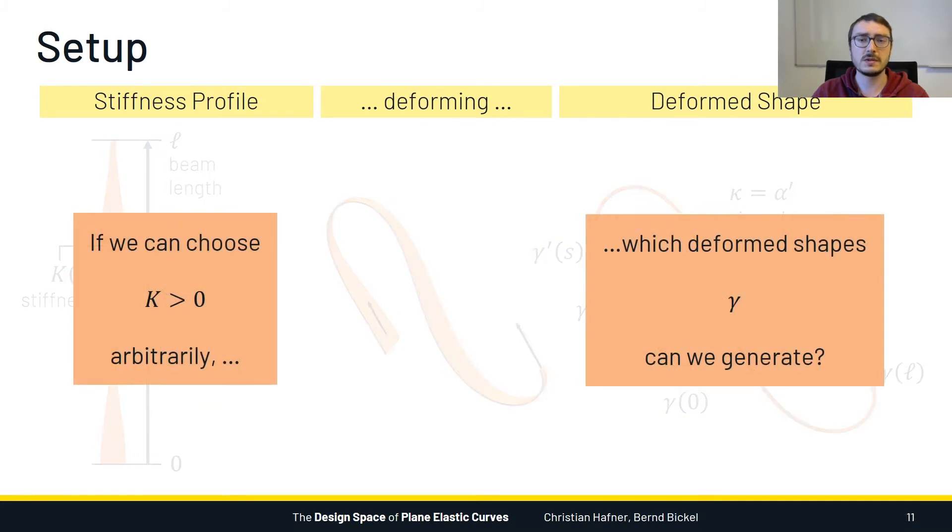And the question we want to answer is the following. If we are allowed to arbitrarily choose a stiffness function, which has to be everywhere positive, which deformed shapes can we generate?